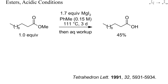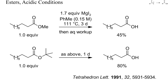SN2 displacement yields methyl iodide and the carboxylate. In this example, a methyl ester was heated with magnesium iodide in toluene, and methyl iodide was probably the main byproduct. I suspect that the Lewis acidity of magnesium iodide also contributed to drive forward this reaction. With the more acid-labile tert-butyl ester, a higher yield of acid resulted after only one day. The byproduct was probably isobutene.